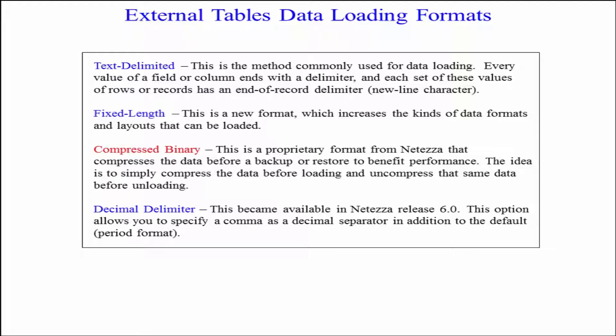Compressed binary. This is proprietary based on the Teradata format. It actually compresses the data before a backup or restore. And this will really help your performance. The idea is to simply compress the data before loading and uncompress that data before unloading. And then with the new release of 6.0 and higher of Netezza, we've got the decimal delimiter. This became available only fairly recently. So some of you may not have seen this. This option allows you to specify a comma as a decimal separator in addition to the default period format.